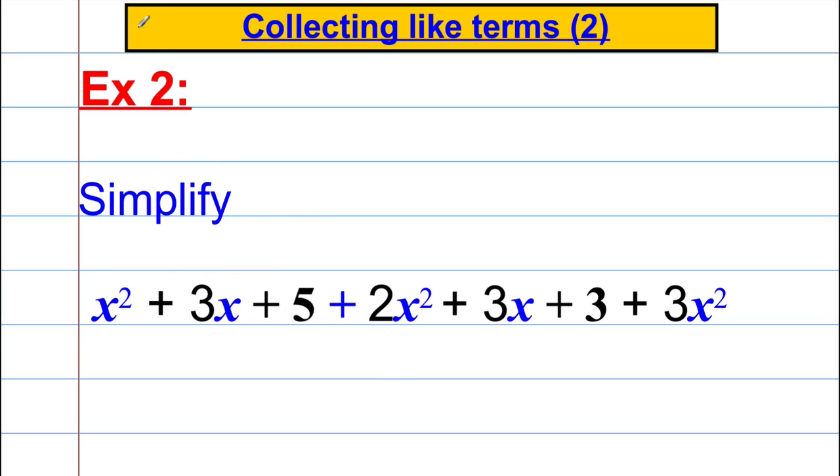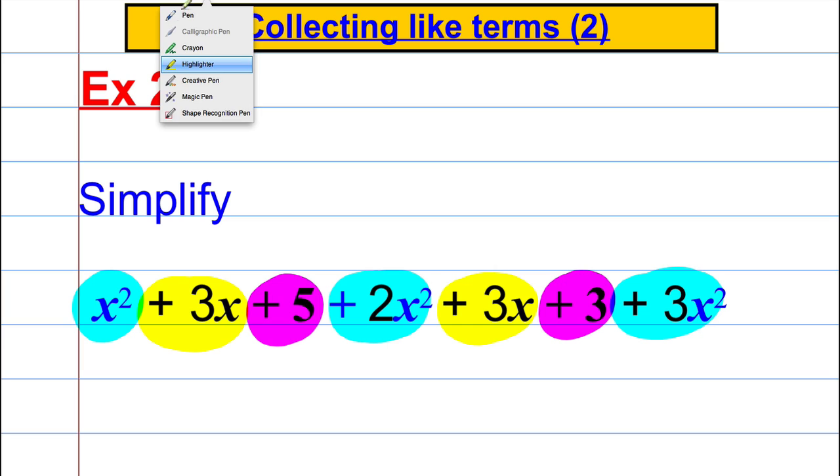The next one—so remember what I said before, x squared are separate from x's and are separate from numbers. So we have an x squared here. Make sure you buy highlights for the exam, it makes it much easier. 2x squared and a 3x squared, we've got 3x's and we've got another 3x's, and we've got plus 5 and plus 3.